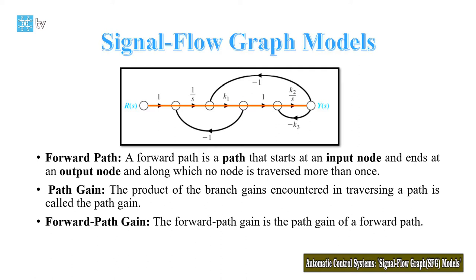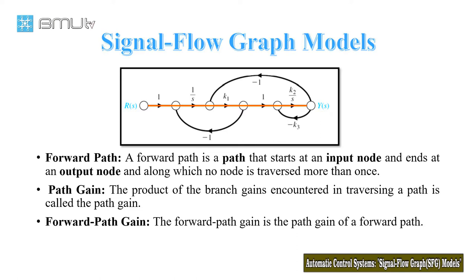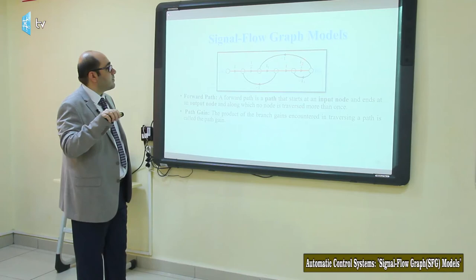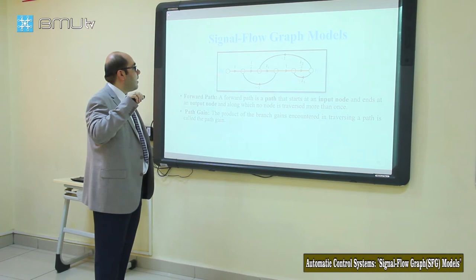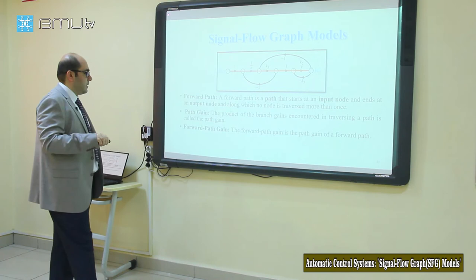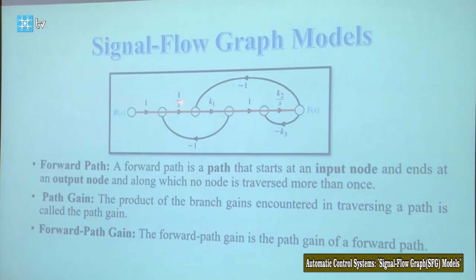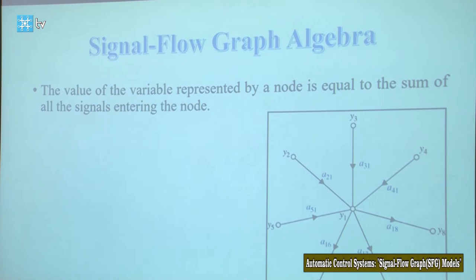Pass gain: the product of the branch gains encountered in traversing a path is called the path gain. For example, the gain of this branch is 1, the gain of this branch is k1, the gain of this branch is minus 1, and so on. So 1 × (1/s) × k1 × 1 × (k2/s) is the path gain of this forward path. The forward pass gain is the product of the gains of each branch traversed along the forward path.